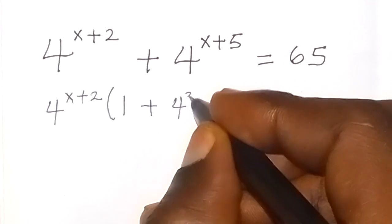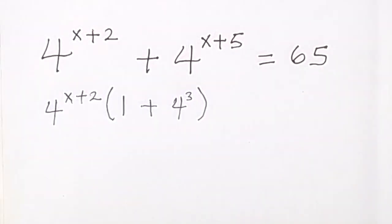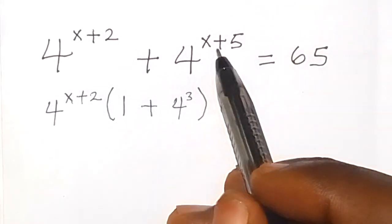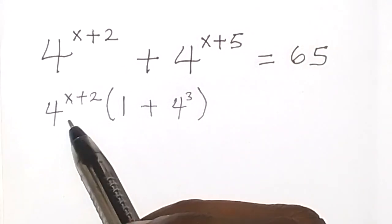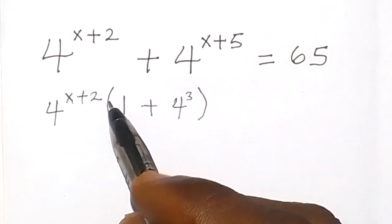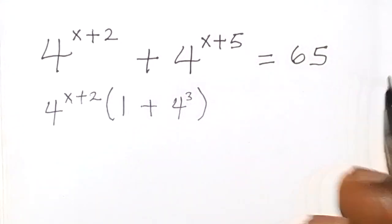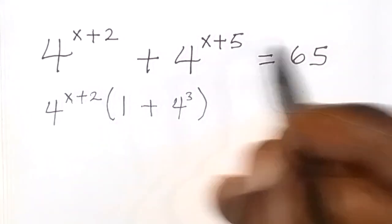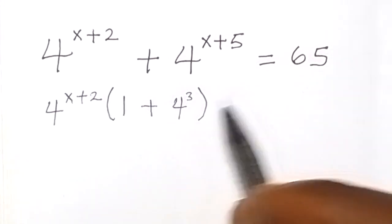4 raised to power 3, because when you divide 4 raised to power x plus 5 divided by 4 raised to power x plus 2, we minus the powers. Then x will cancel with x, and 5 minus 2 equals 3.